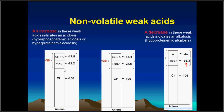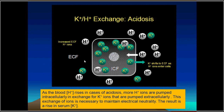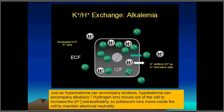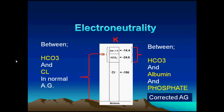Increase in total weak acids will be associated with decrease in bicarbonate; decrease in total weak acids will be associated with increase in bicarbonate. Also important is the potassium-hydrogen ion exchange in acidosis for electroneutrality: hydrogen ions go inside the cell for buffering and potassium goes outside. In alkalosis, hydrogen ions go outside and potassium goes inside.